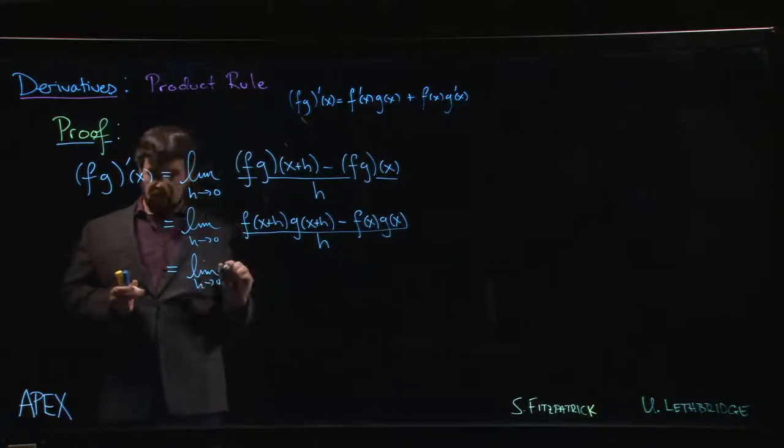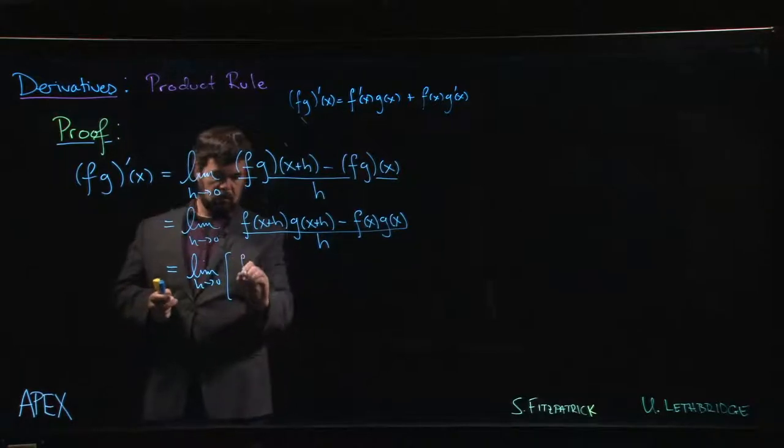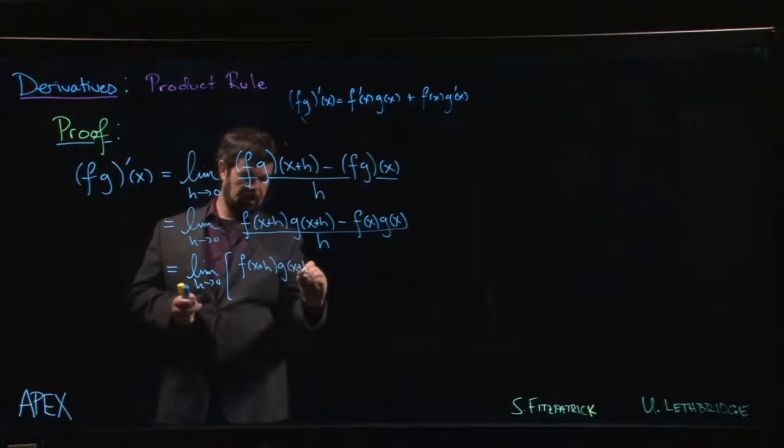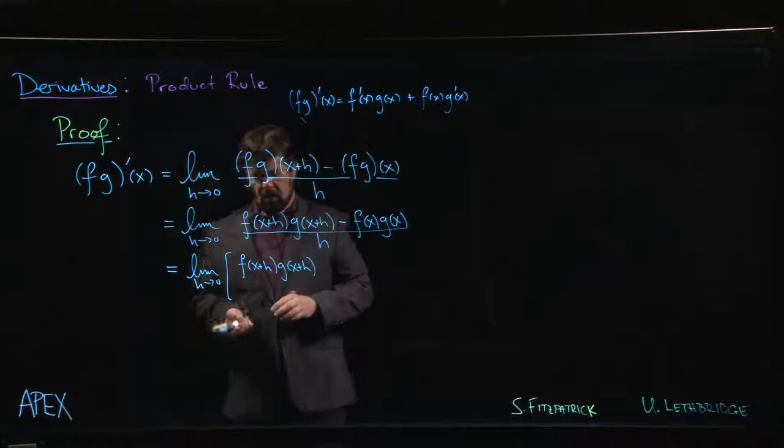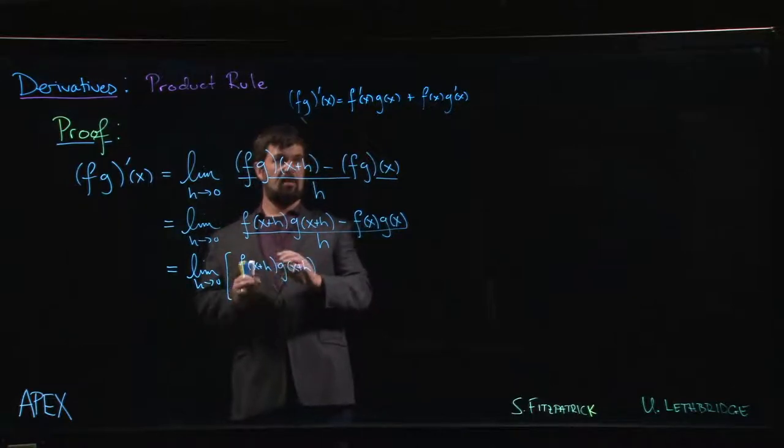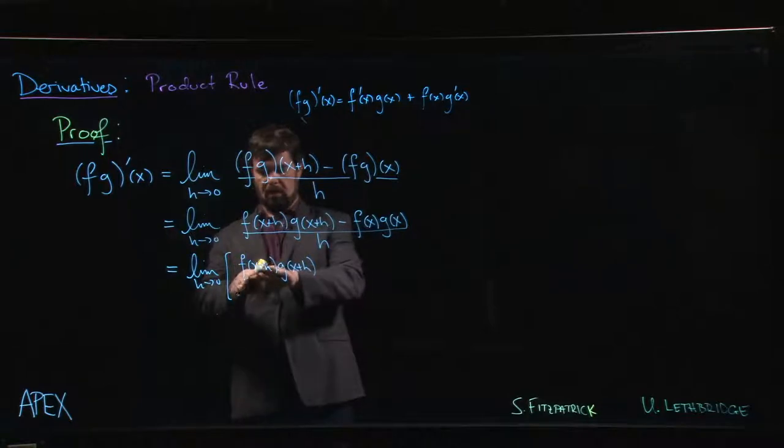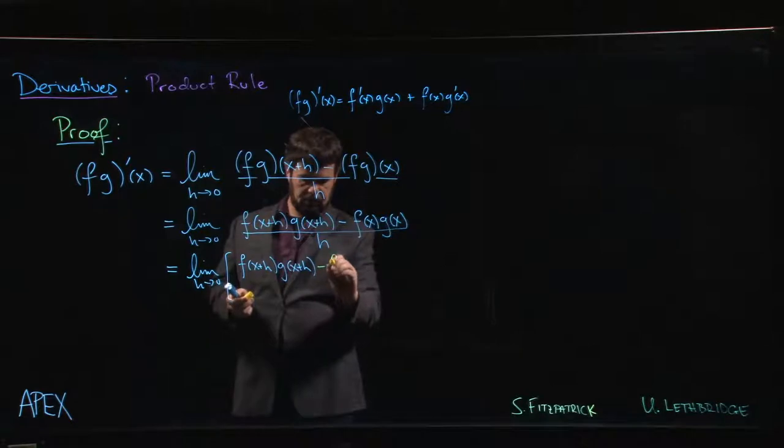To get f prime I need an f of x plus h minus an f of x, and I want to be multiplying by g. So we're going to do a little bit of a trick.